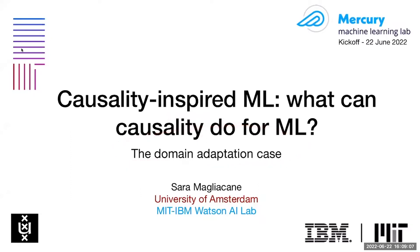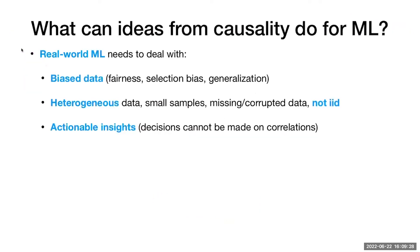First I'll talk in general about why causality is useful for machine learning, especially for distribution shifts. Then I'll talk about the domain adaptation work, and finally give a sneak peek at some newer work.